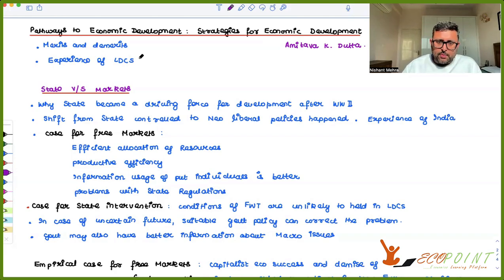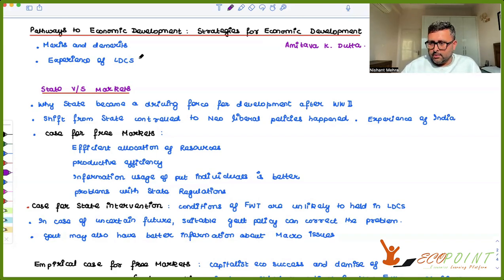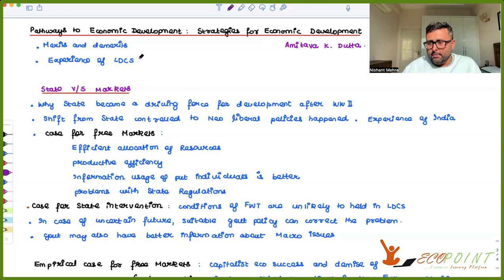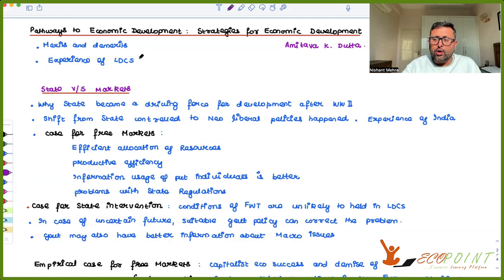The kind of question which might come in the paper is: what are the different strategies for economic development? Discuss merits and demerits of both with the focus on India. So you will have to give the merits and demerits of all of these strategies. In all of these strategies, the author discusses that you do not have to take up a stand — there is a middle ground in between each of them.